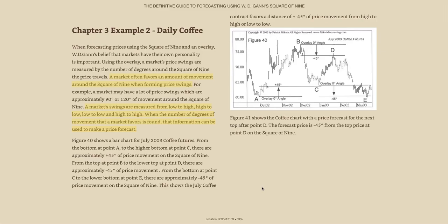Hey everyone, Geo here with the Blueprint. Today I'm excited to release my latest indicator, the Dynamic Square of Nine. This is a powerful tool that dynamically adapts with price action, providing another way to forecast support and resistance using the Square of Nine.